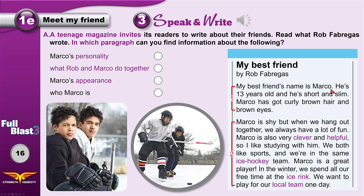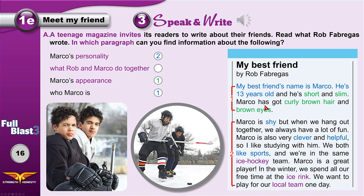My best friend's name is Marco. He is 13 years old — that's who Marco is, paragraph one. He is short, slim, with curly brown hair and brown eyes — that's his appearance, also paragraph one. Paragraph two covers his personality: he is shy, clever, helpful, and he likes sports. We always have a lot of fun together. We study together and spend all our free time at the ice rink. The ice rink is the place where you play ice hockey.